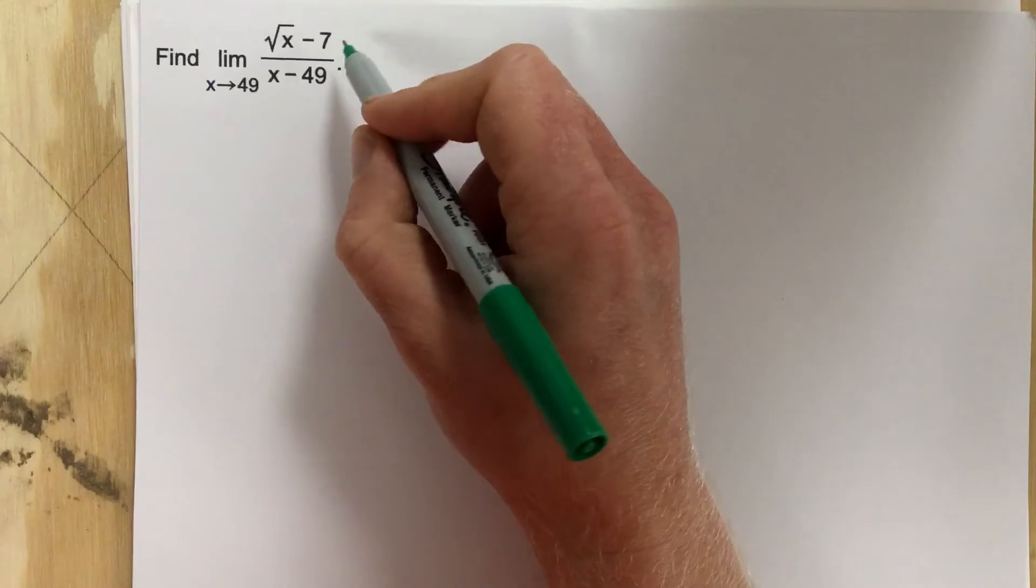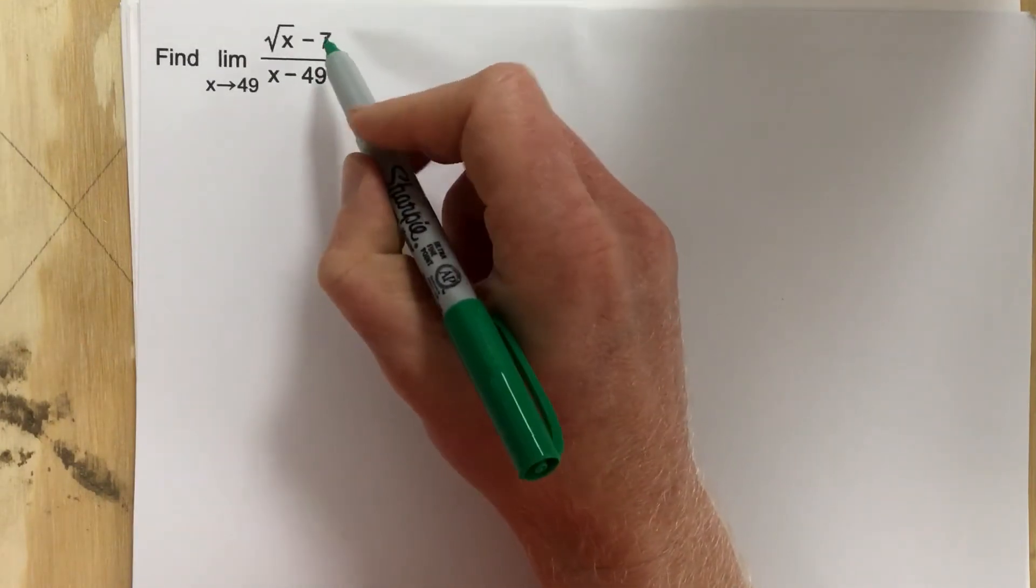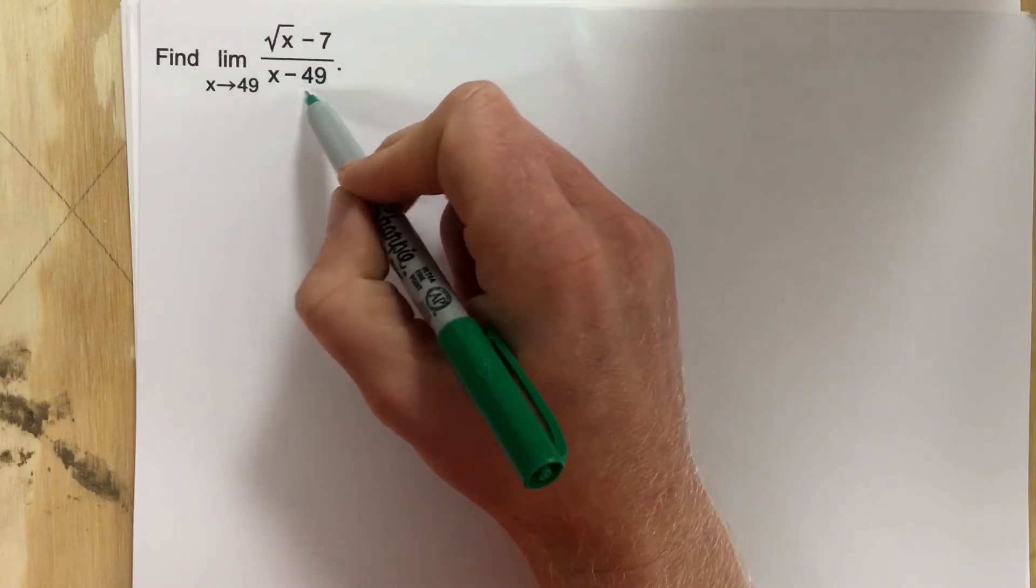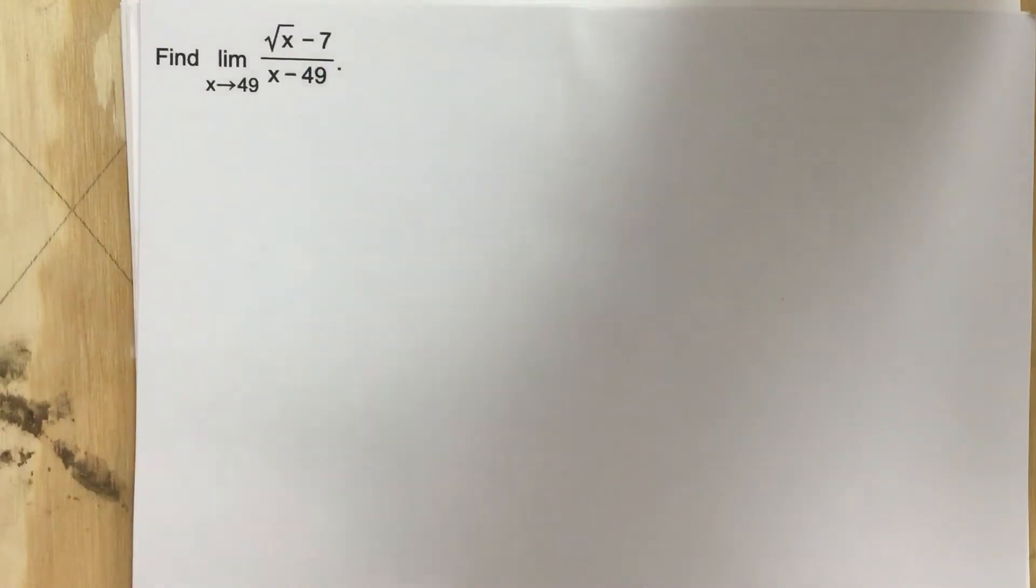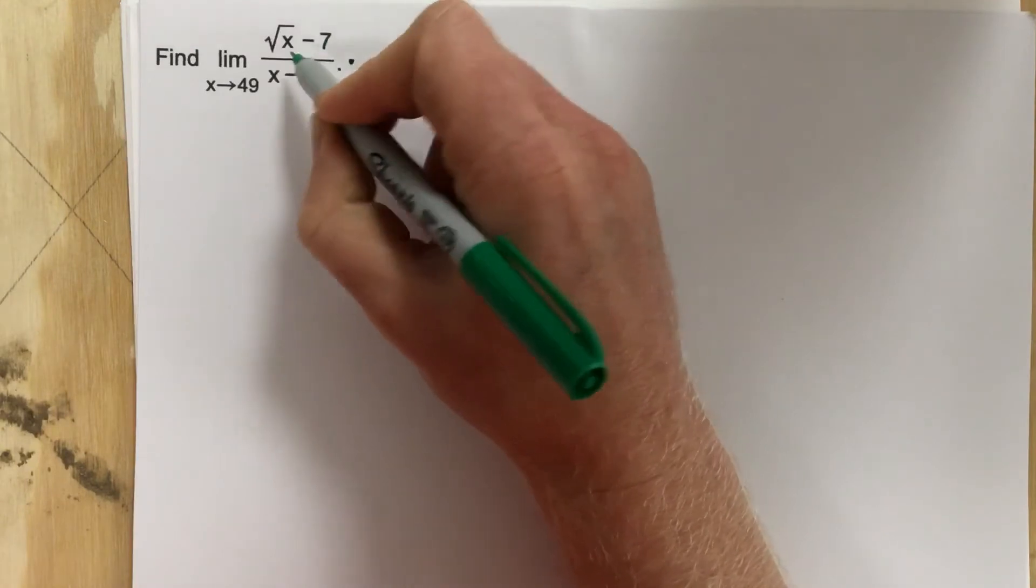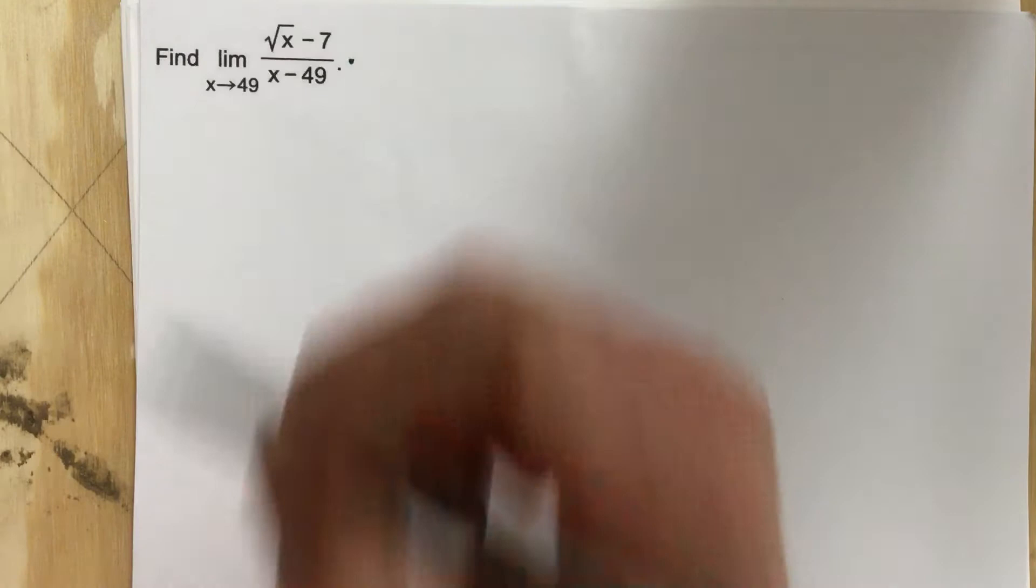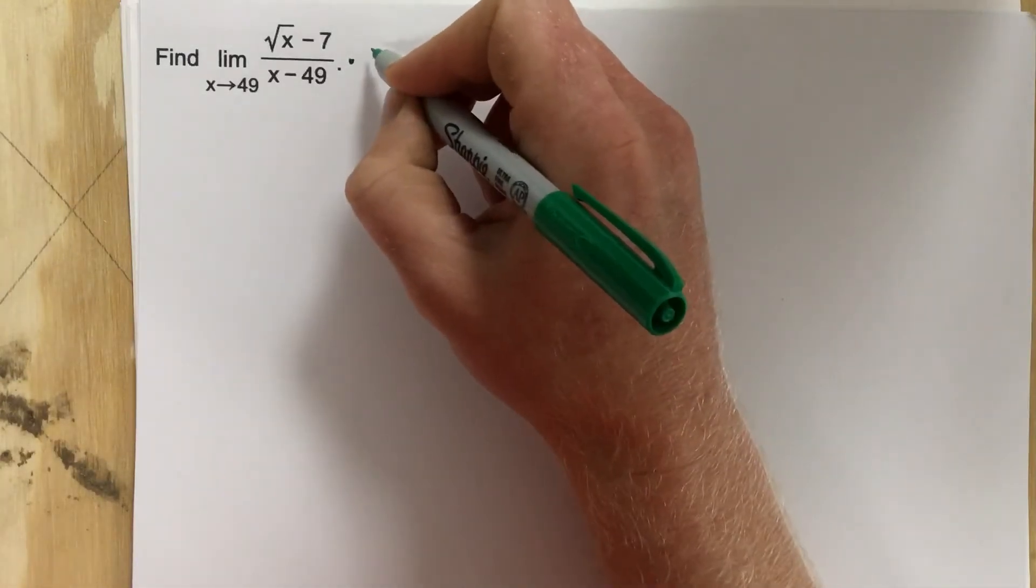So what I need to do is multiply or do something algebraically to essentially cancel this bottom out. So I'm going to multiply by the conjugate. Anytime I see a root x or a root in the problem, I immediately think, I'll multiply by the conjugate and get rid of that root.